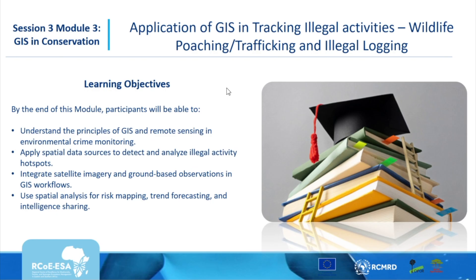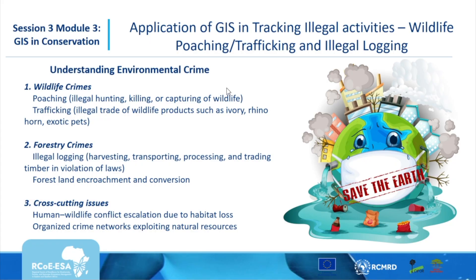We are talking about three major components. Number one is wildlife crimes, where we are talking about poaching, which refers to the illegal hunting, killing, and capturing of wildlife.